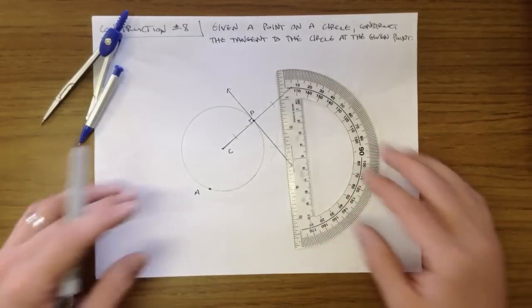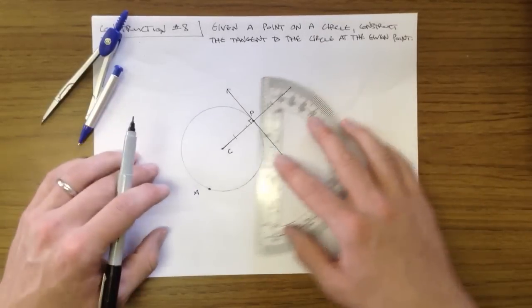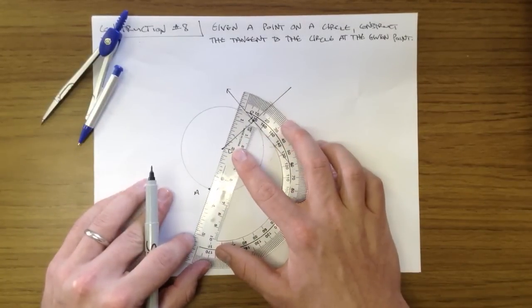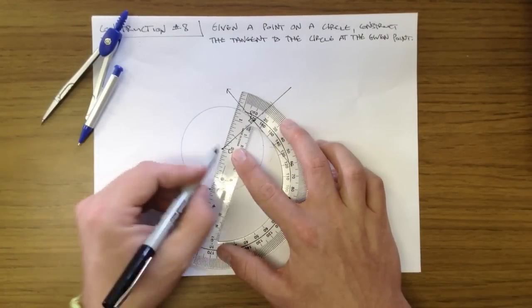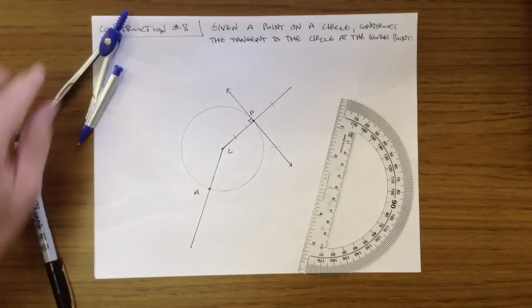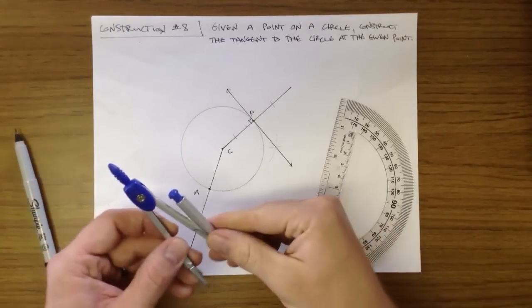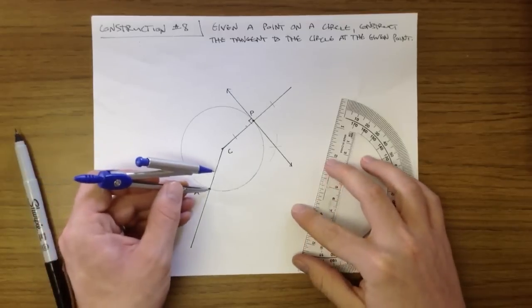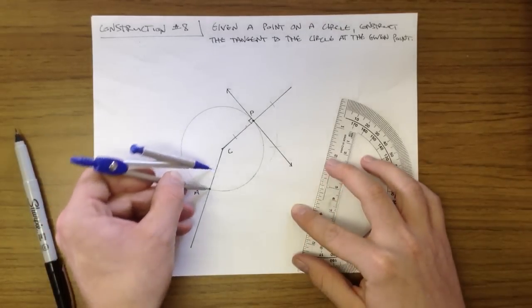So to do the process all over again, we're going to draw a line from C through point A. And now we're going to draw a line perpendicular to this line through point A. So using point A as a midpoint,